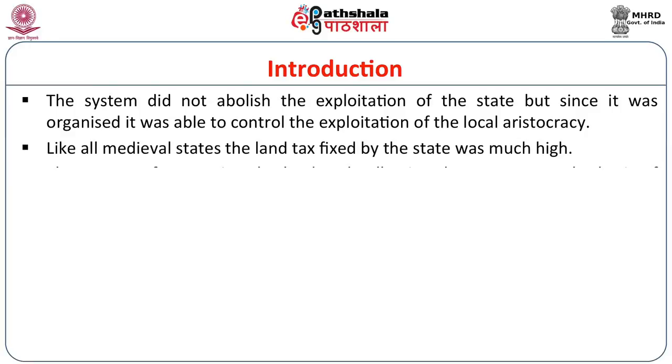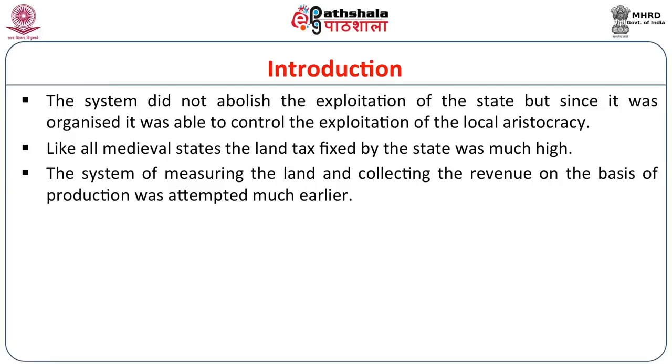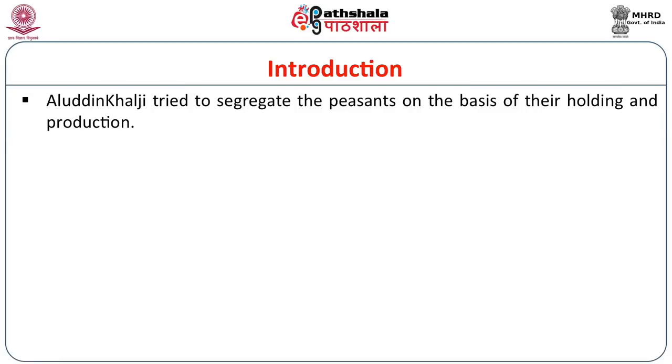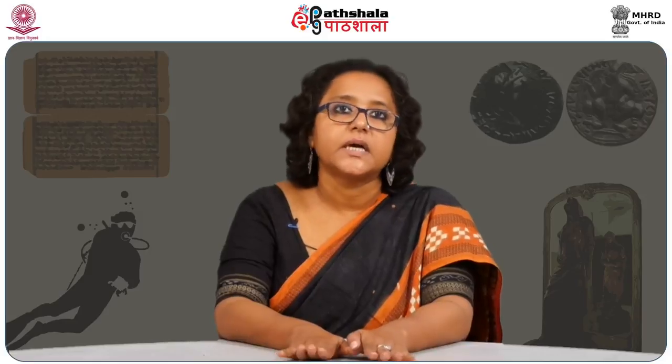Like all medieval states, the land tax fixed by the state was very high. The system of measuring land and collecting revenue on the basis of production was attempted much earlier. It was given a fresh start during the time of the Delhi Sultanate and moved on to the early Mughals, then through a brief period of Sher Shah, and then the final touch was given by Akbar before the system moved on to the British. Alauddin Khalji tried to segregate the peasants on the basis of their holdings and production — this was the rudimentary start to what was later completed by Akbar.